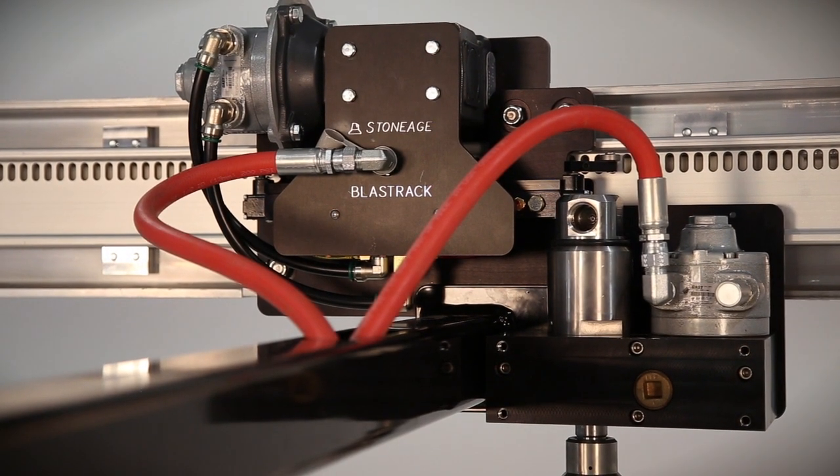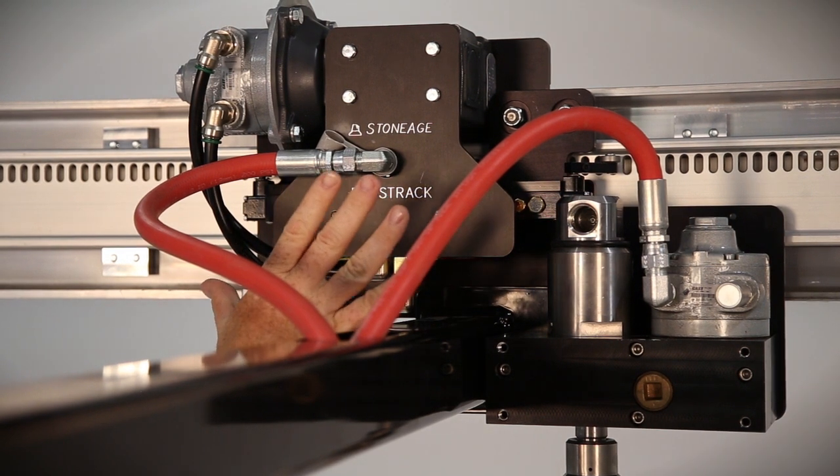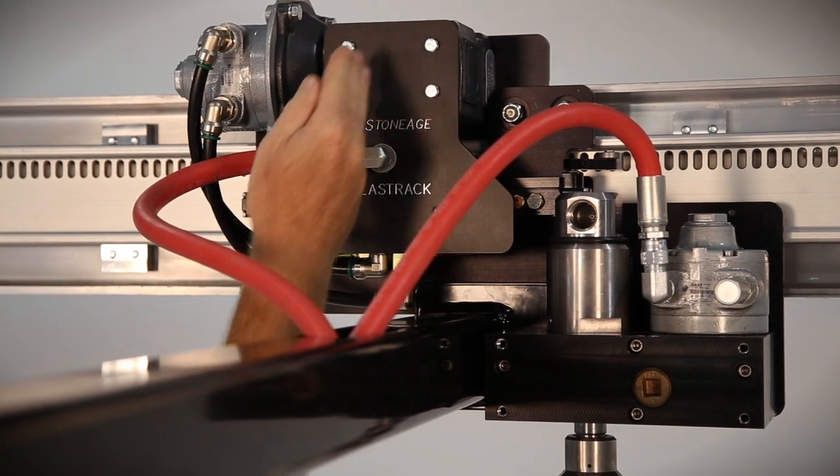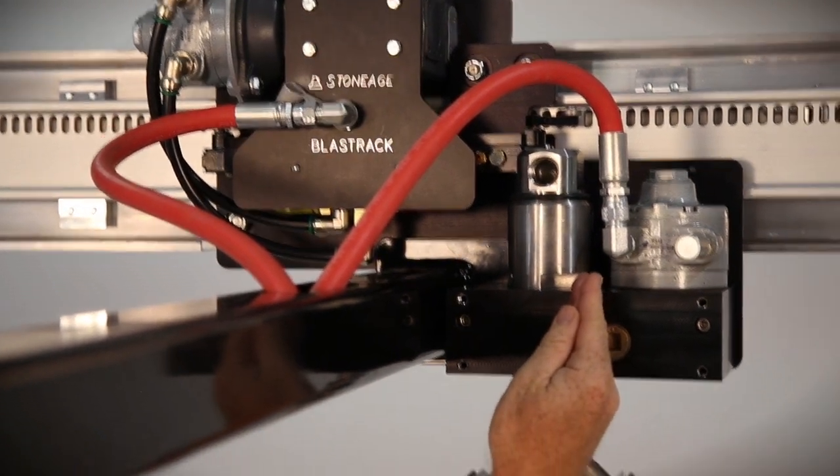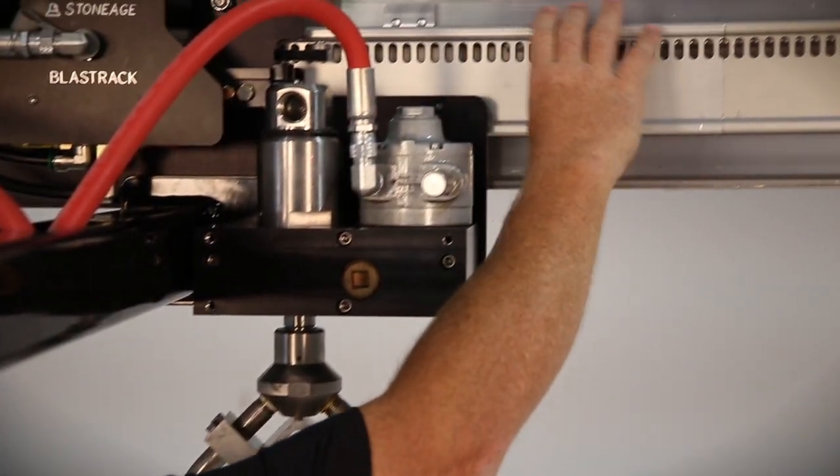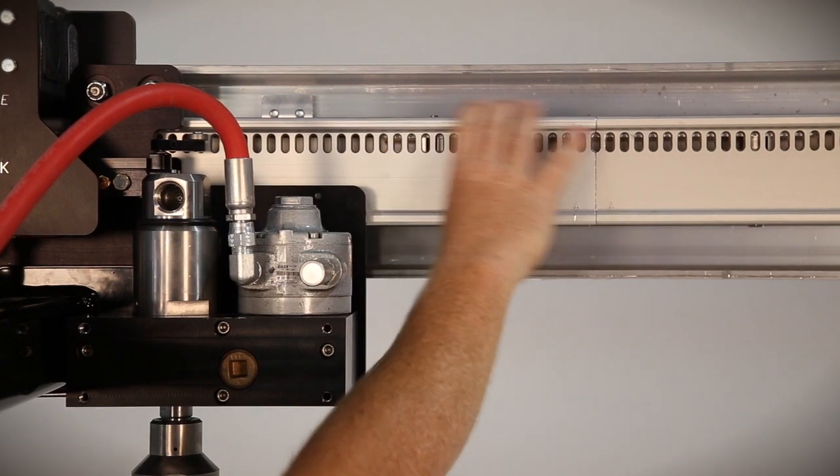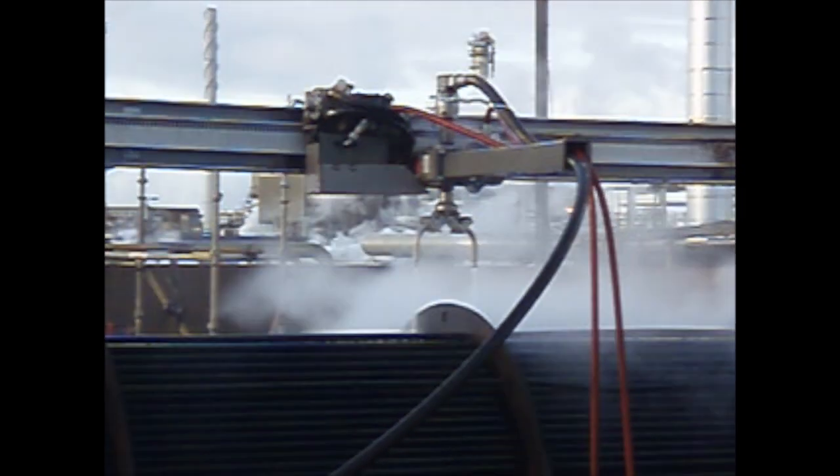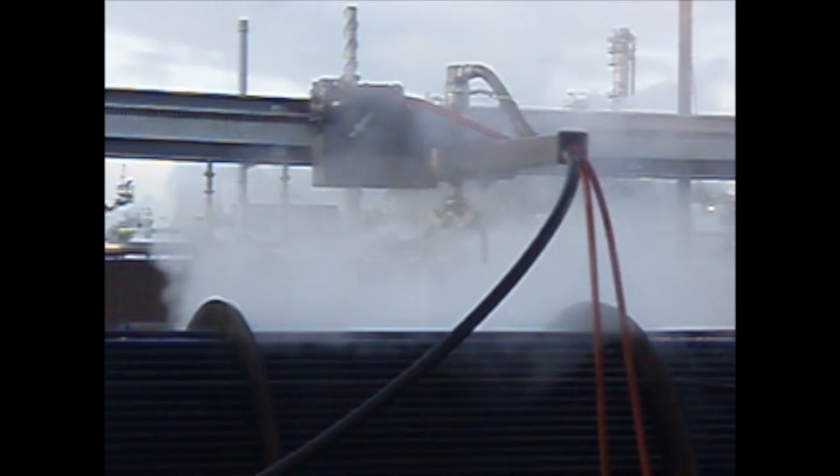The heart of our Bundle Blaster shell-side cleaner is our BlastTrack technology: a drive tractor, a rotary package, and your choice of head, all being driven back and forth by a slotted rail system. This gives you a lot of versatility in how you configure your Bundle Blaster for your specific application.